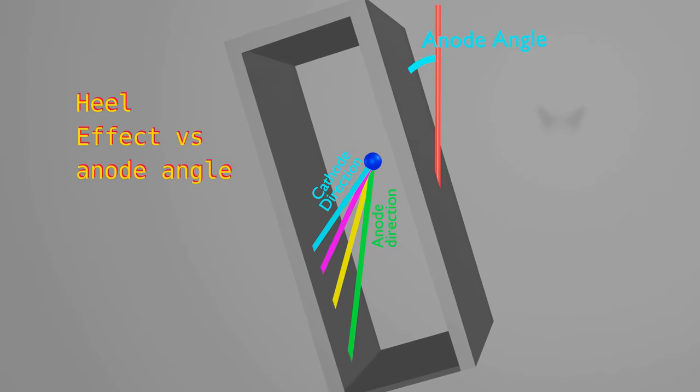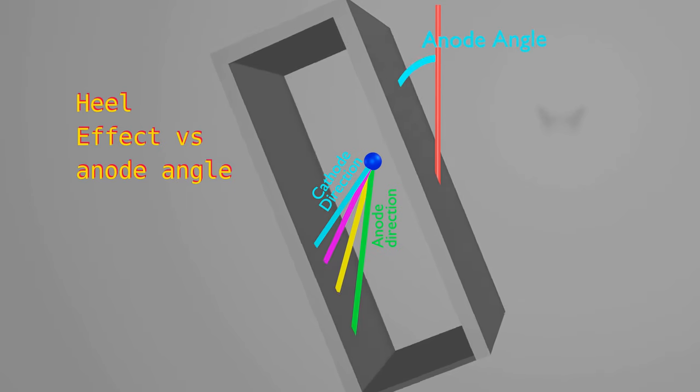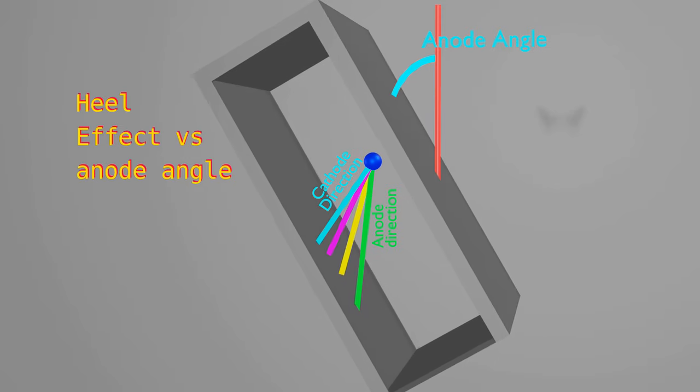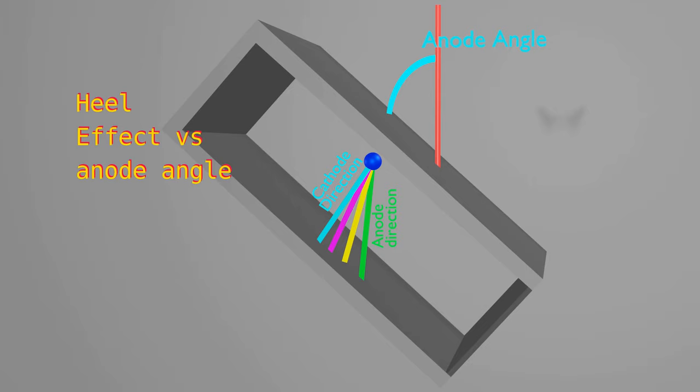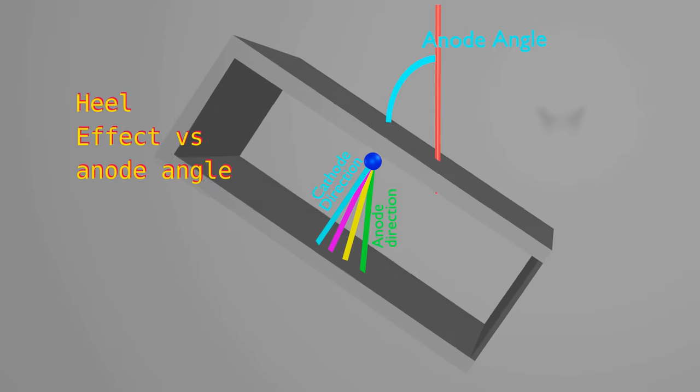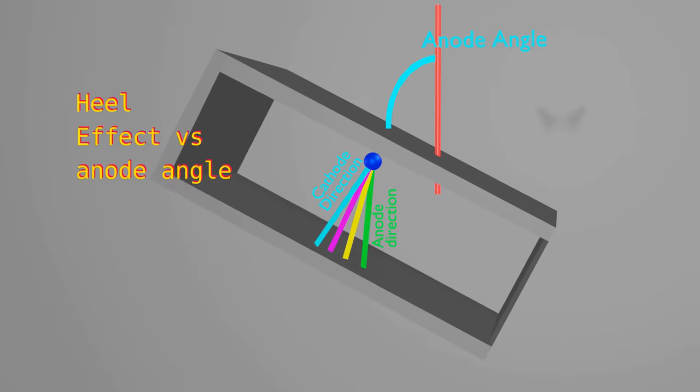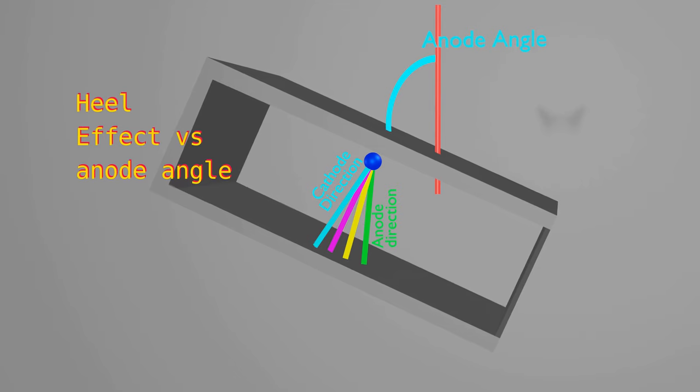Now we change anode angle. You can observe, as anode angle increases, the difference of path length along anode side and cathode side decreases. So, the difference in absorption or intensity variation will reduce with anode angle. We can say, with increasing anode angle, heel effect reduces.